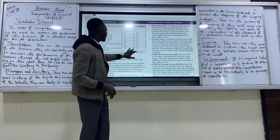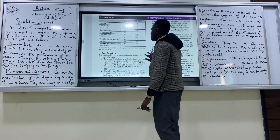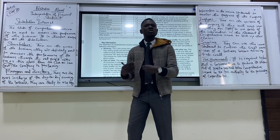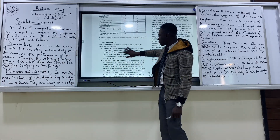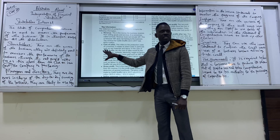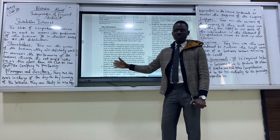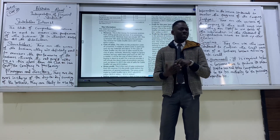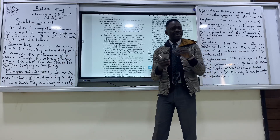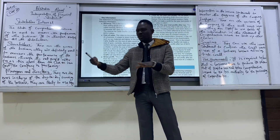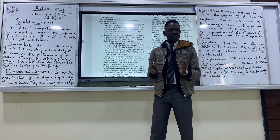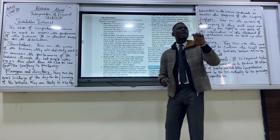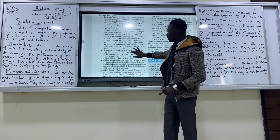In the statement of comprehensive income, the key items are: revenue — the money made by the business from selling its products; and cost of sales — the amount of money spent to ensure that the product is made available. Revenue minus cost of sales gives us our gross profit.